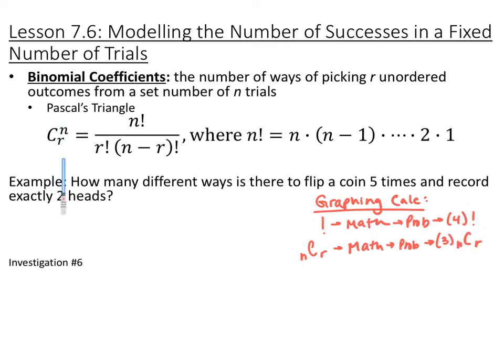Your calculator also has an NCR button — your N choose R button. Go to math, probability, and number 3 is your NCR. An example of this would be: how many different ways is there to flip a coin 5 times and record exactly 2 heads? You're flipping it 5 times and maybe the first and second flips are heads and then the next 3 are all tails, for example.